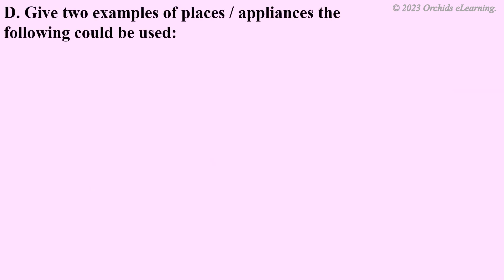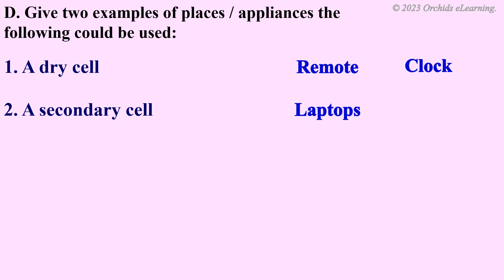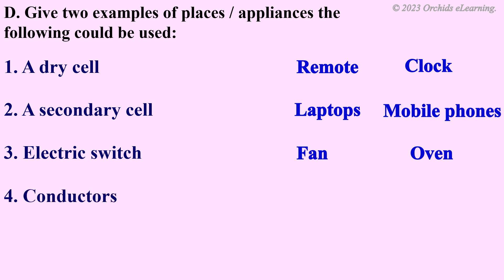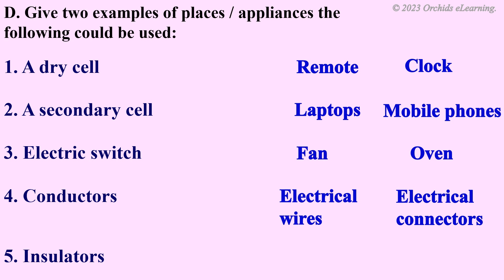Give two examples of places or appliances the following could be used. Dry cell: remote, clock. Secondary cell: laptops, mobile phones. Electric switch: fan, oven. Conductor: electrical wires, electrical connectors. Insulators: plugs, gloves.